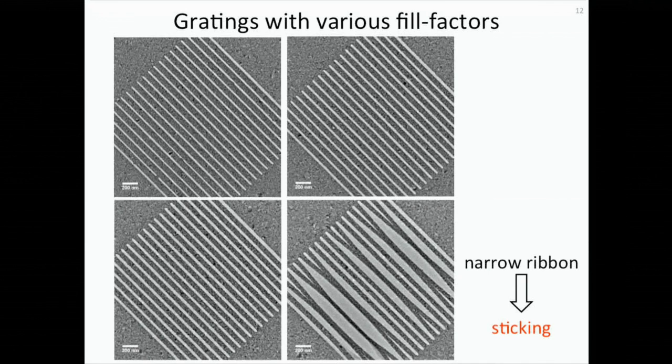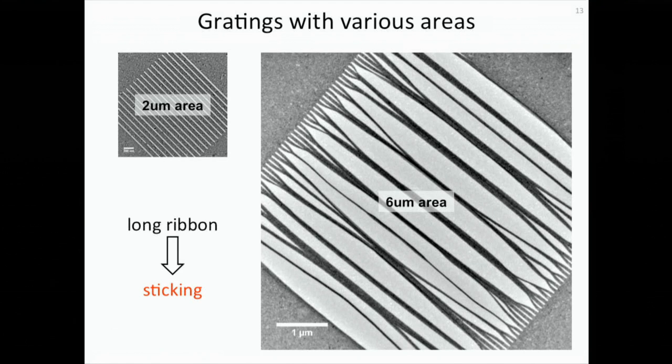However, there are some problems in the fabrication of the nanogratings. In this slide, I show the fabricated nanogratings with various fill factors. We keep the pitch of all the gratings the same, but we vary the width of the silicon nitride ribbon, hence we change the fill factors. We can see that when we get to a small fill factor, or equivalently a very narrow silicon nitride ribbon, we observe some sticking problems in the fabricated nanogratings. We also see exactly the same problems when we try to fabricate the large area grating. For a small area grating, everything looks good. But when we scale up the area covered by this grating, we can observe a lot of sticking problems.